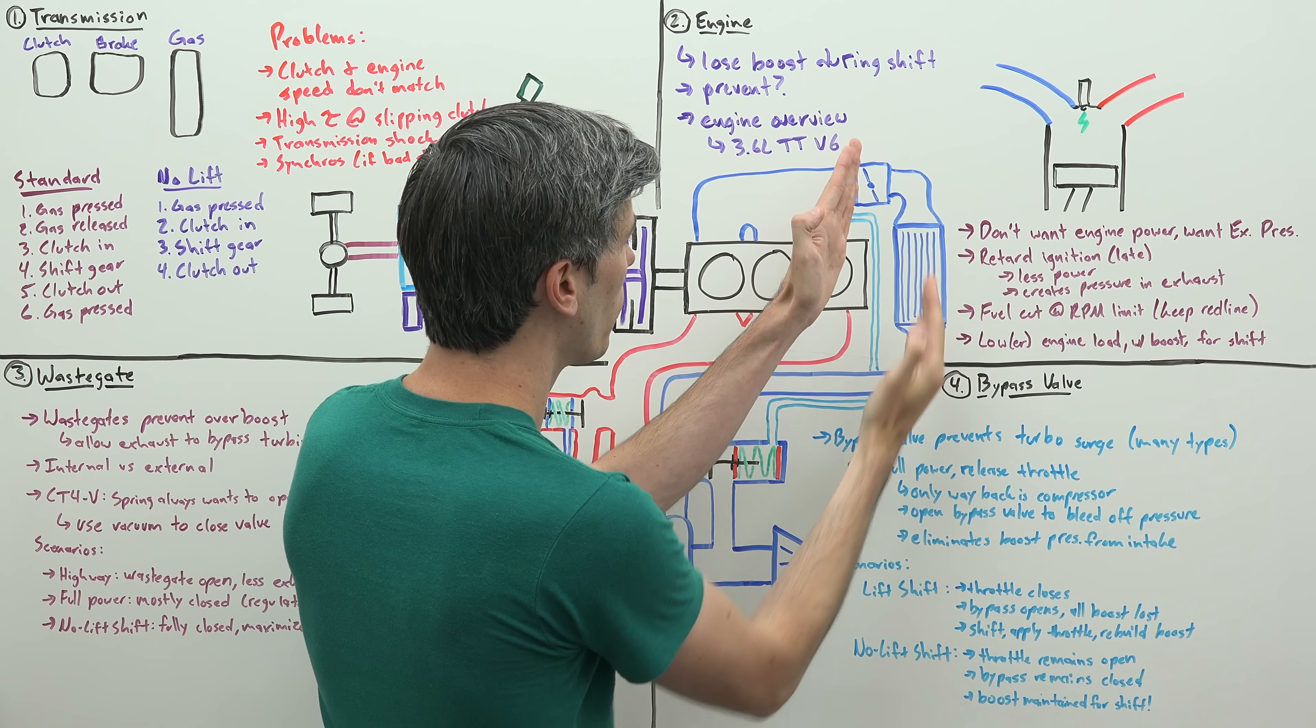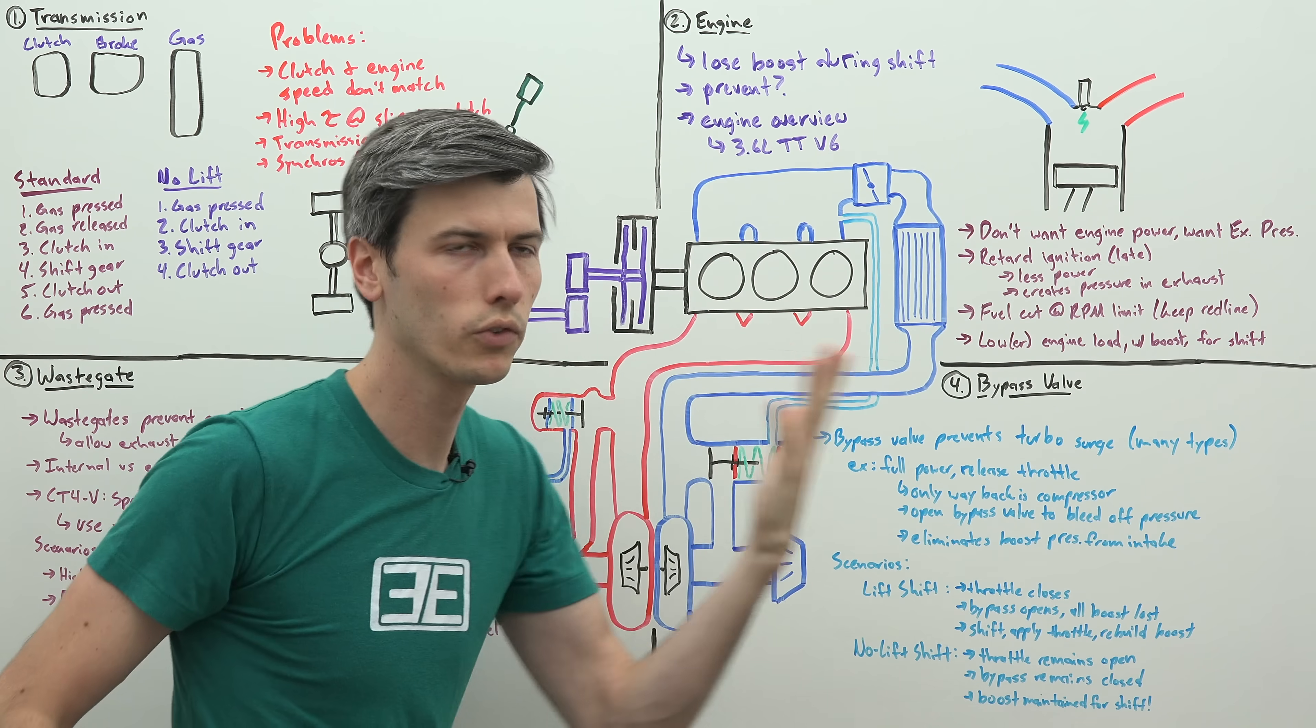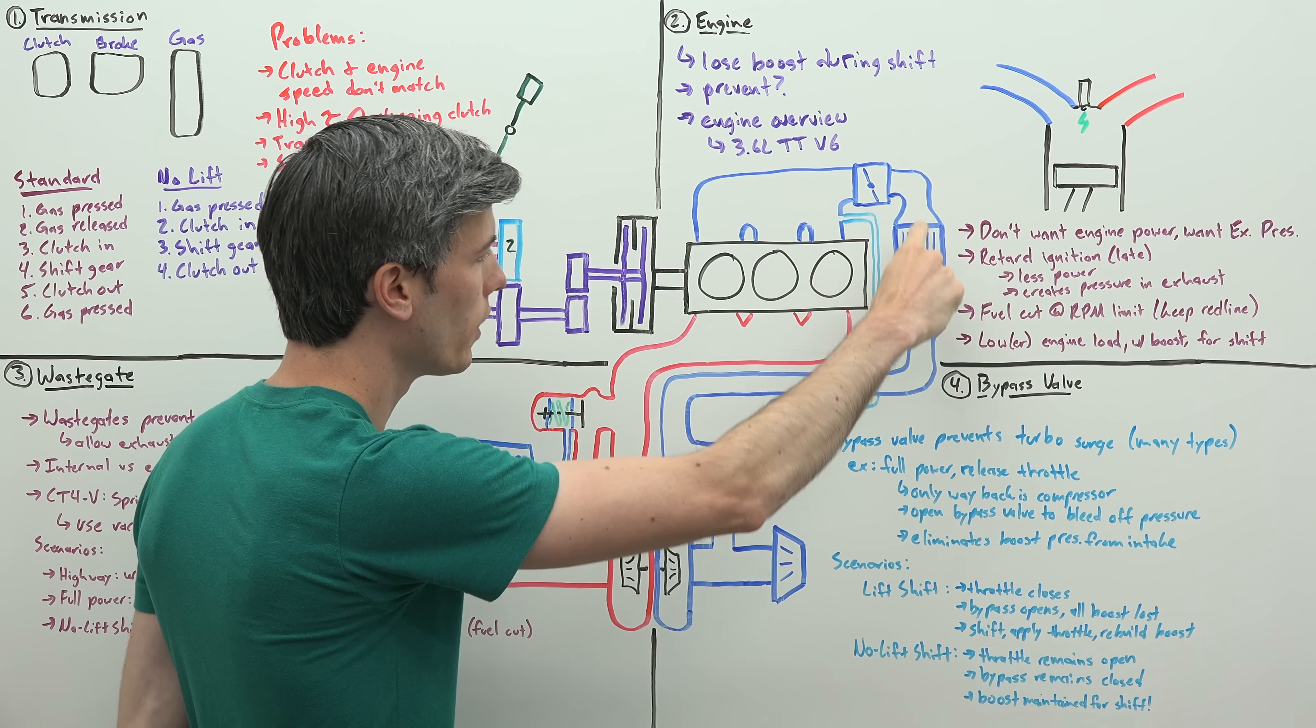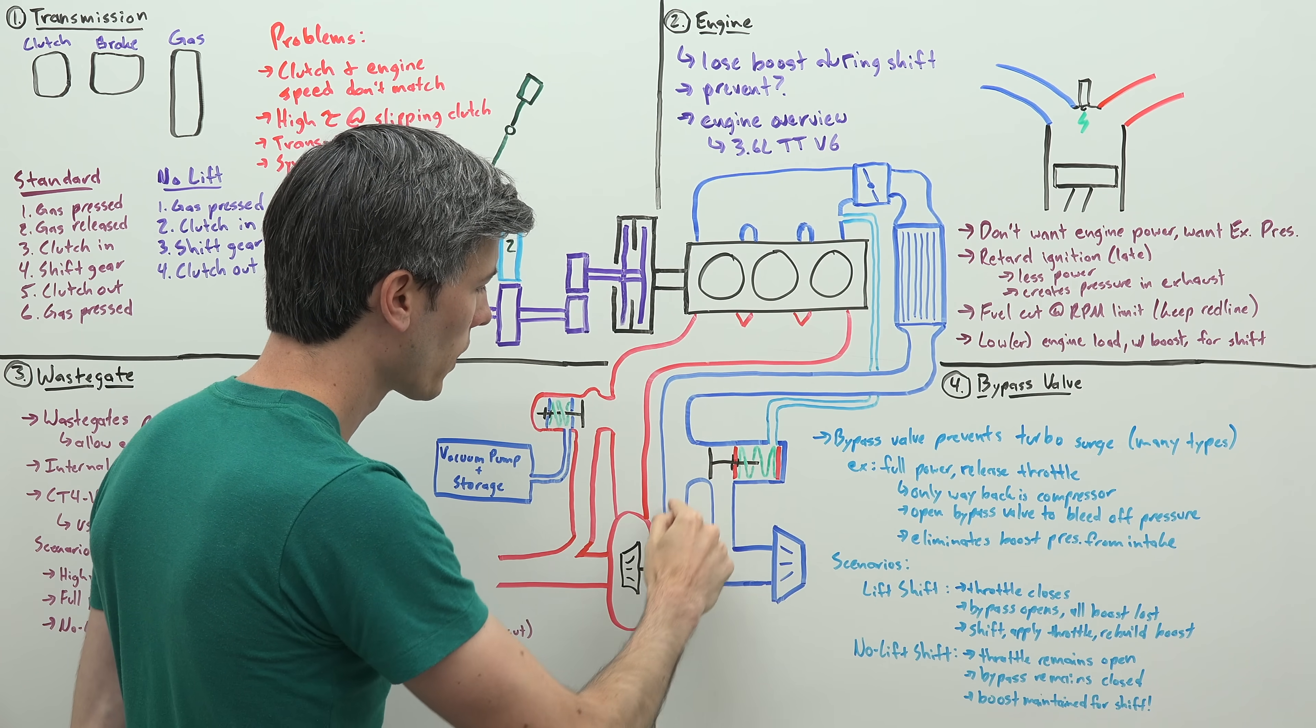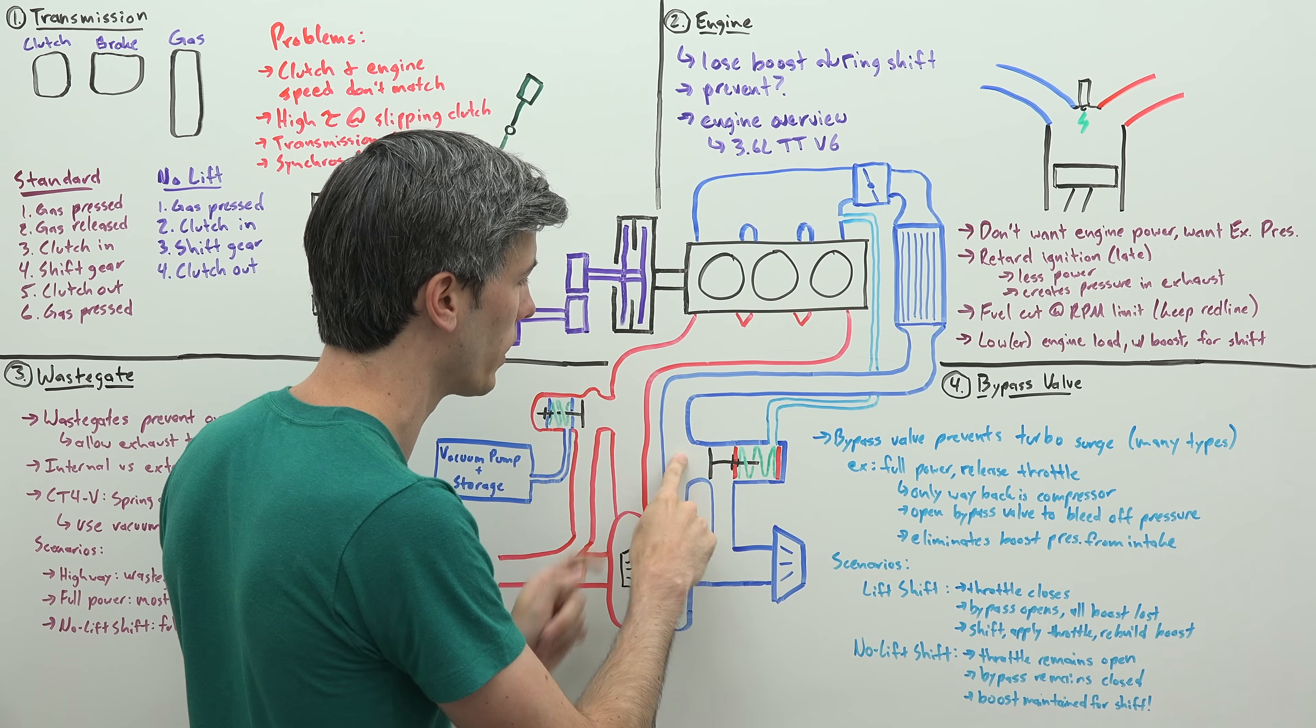And then you let off the throttle and you close that throttle valve. So now you have all this boost, all this air pressure rushing towards this throttle that's now closed. So where does that pressure go? Well, the only place for it to get back out is to go back through the turbocharger. This is called turbo surge. You don't want this to happen, so how do you avoid it?